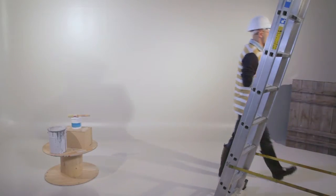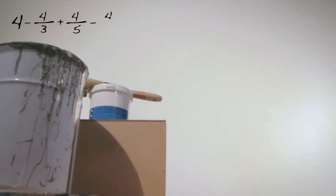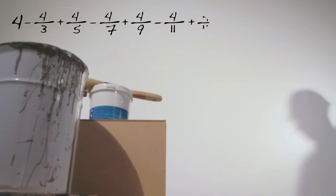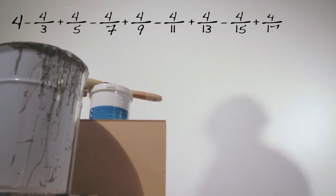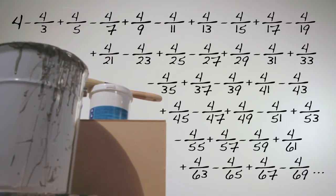To calculate the real pi, start with 4, subtract 4 thirds, then add 4 fifths, subtract 4 sevenths, add 4 ninths, and so on. On doing so, you'll get a number increasingly similar to the real pi. Unfortunately, the screen and our time are not infinite. To attain the true value of pi, you'd have to continue doing this to infinity.